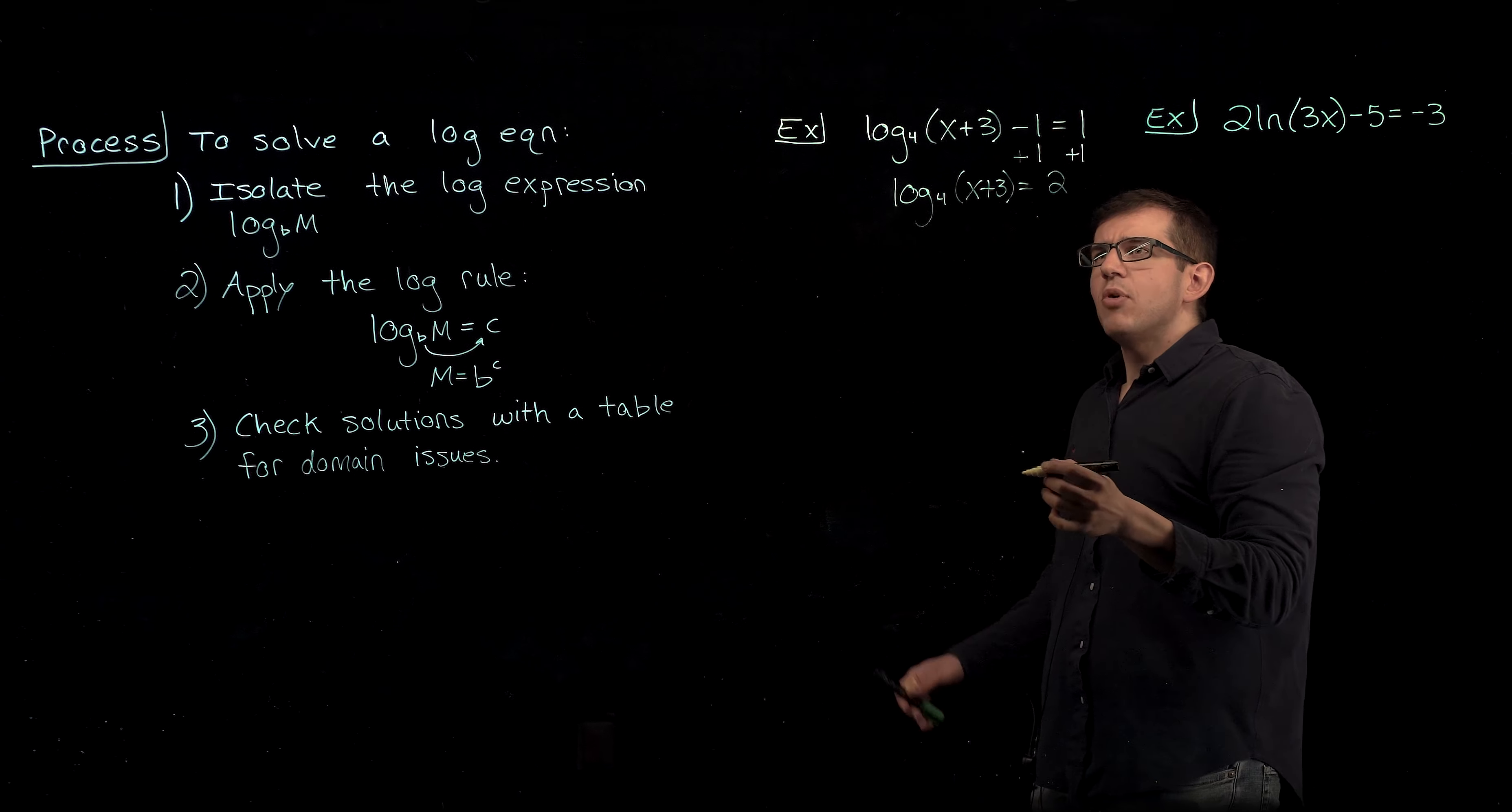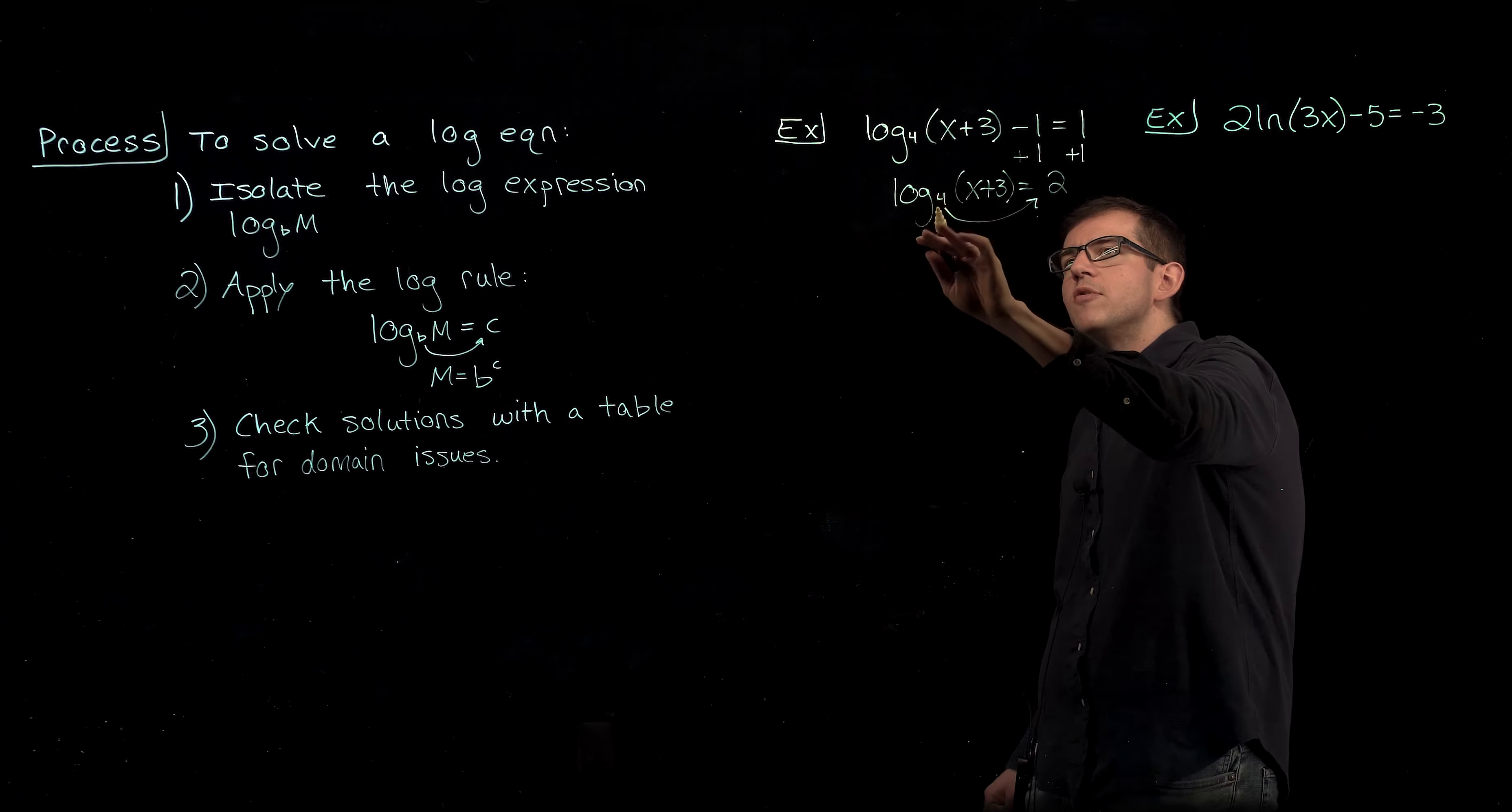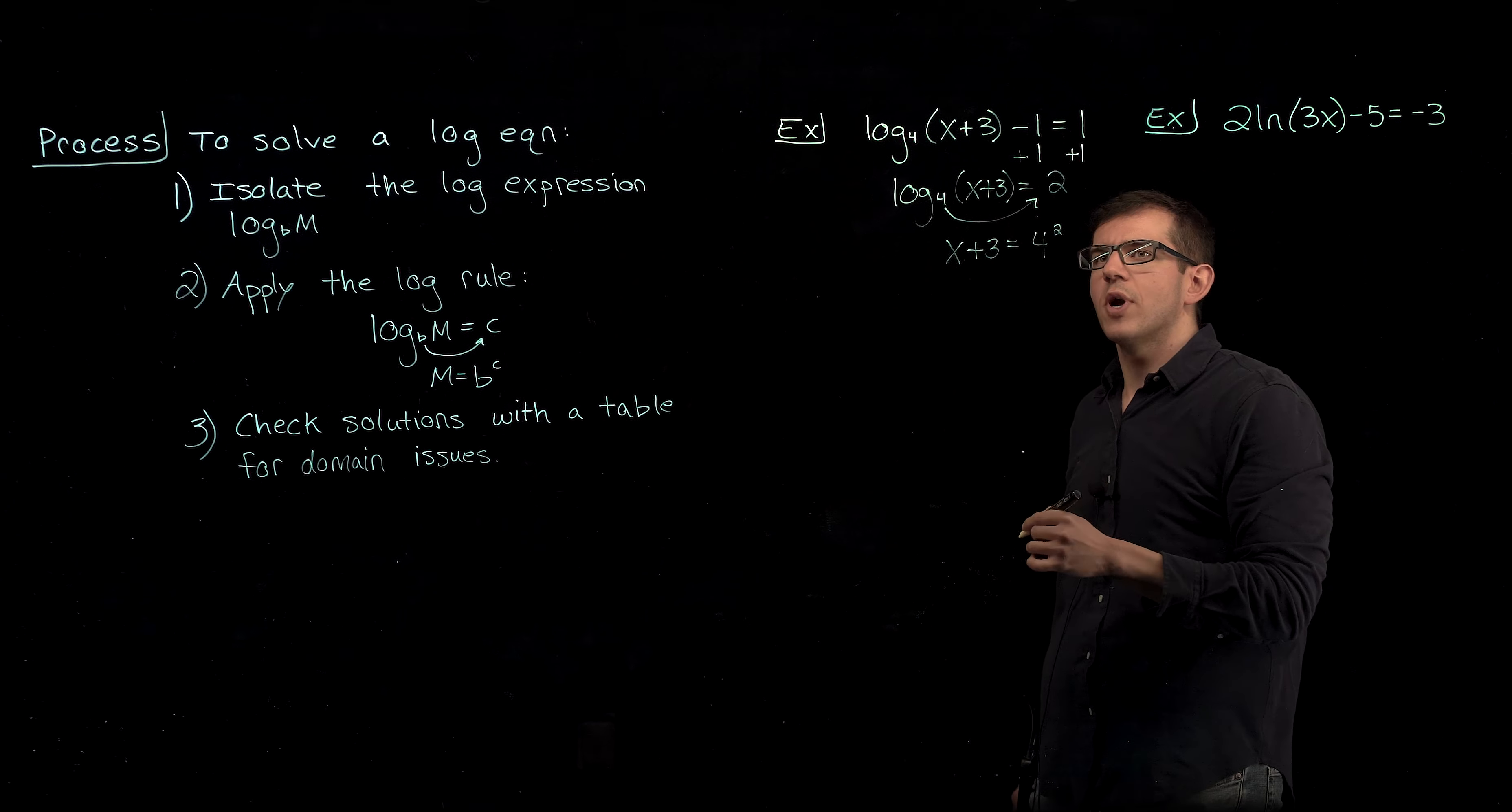At this point, we now have the logarithmic expression isolated by itself, so we can take the base and shift it over to the other side as the base of this 2, removing the log portion of this problem and changing it to an exponential equation, giving us x plus 3 is equal to 4 to the second, or 4 squared,